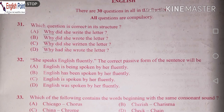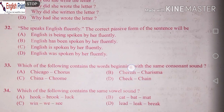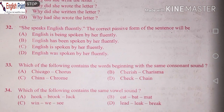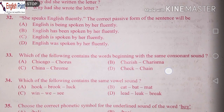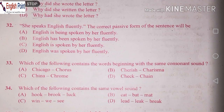This is the right answer. The correct passive form of the sentence will be: A) English is spoken by her fluently, B) English has been spoken by her fluently, C) English is spoken by her fluently, D) English was spoken by her fluently. The active voice is in simple present tense: She speaks English fluently. The right answer is C — English is spoken by her fluently.